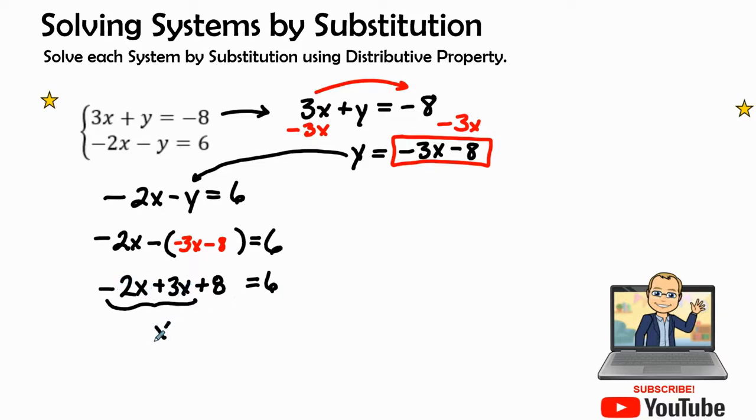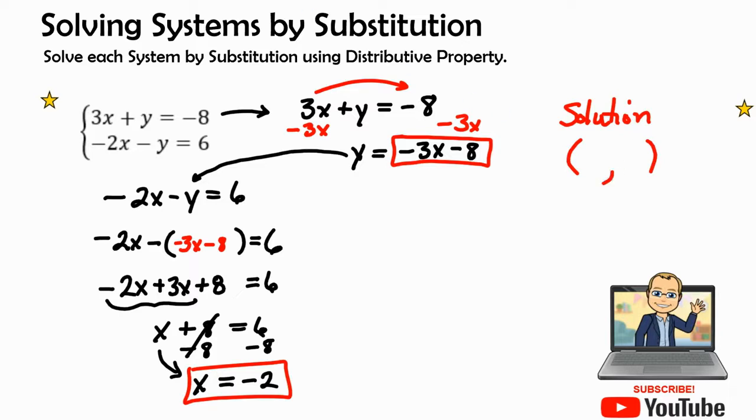We could do some combining like terms. We have 3x and a -2x which leaves us x + 8 = 6. We are then going to subtract 8 from both sides. When I bring my x down, 6 - 8 is -2. So in our solution we already have the x value which is -2.